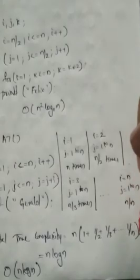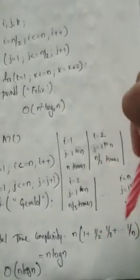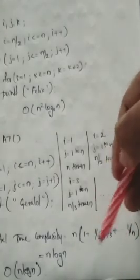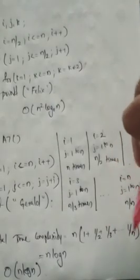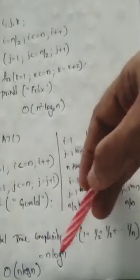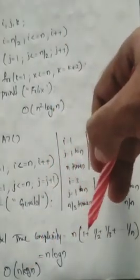n into 1 plus 1/2 plus 1/3 up to 1/n — that is the logarithmic formula. The equation 1 plus 1/2 plus 1/3 up to 1/n up to n log n gives total time complexity of order of n log n. This is the class, thank you for watching.